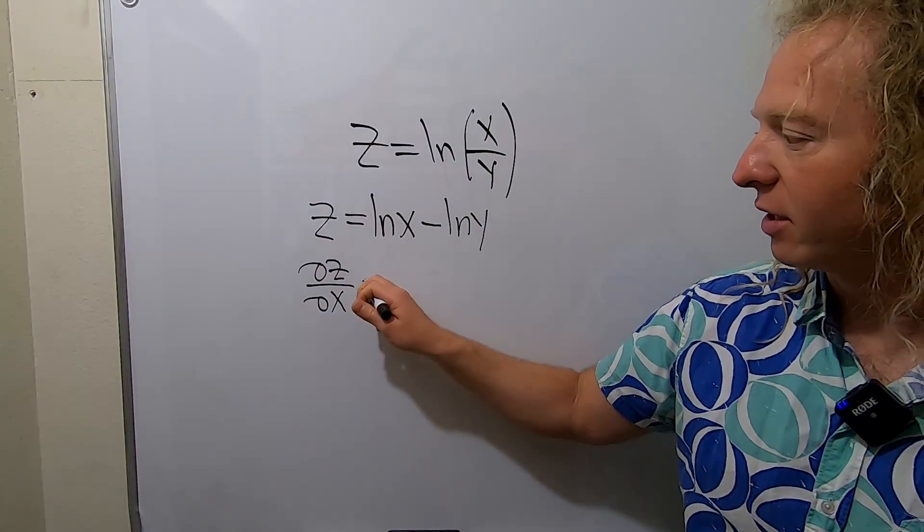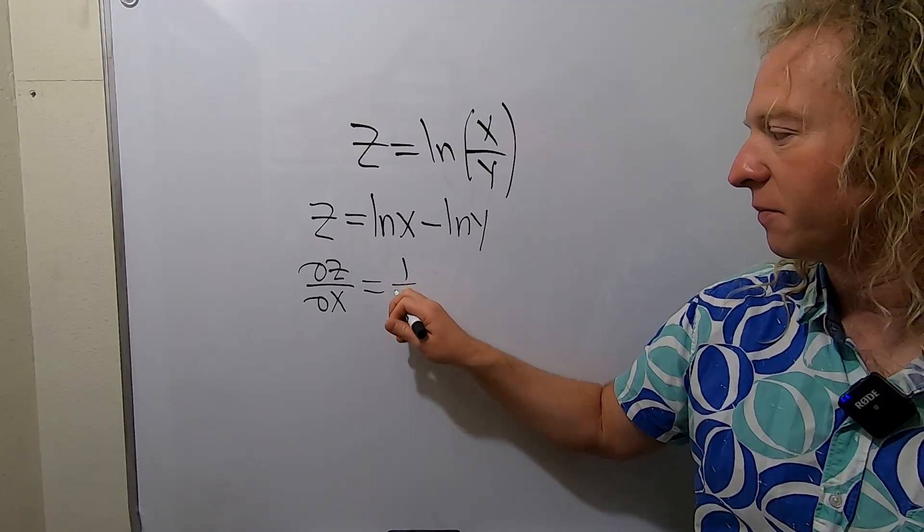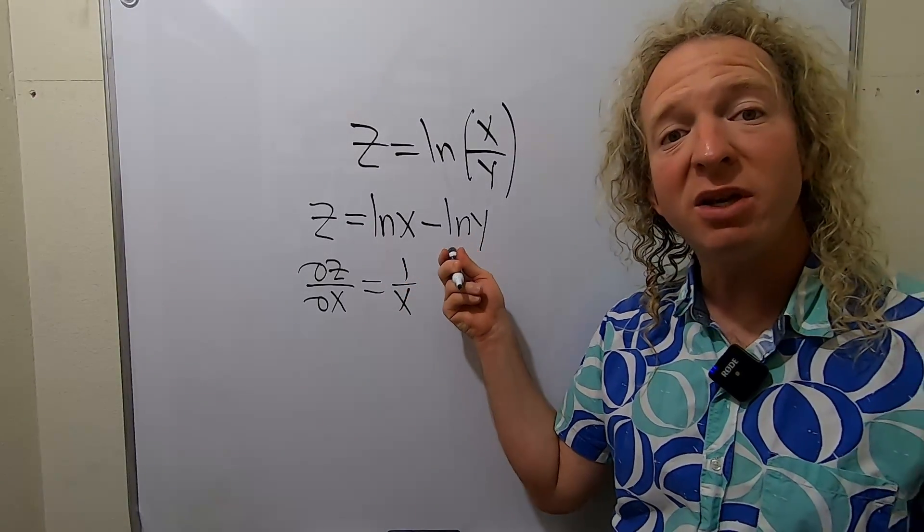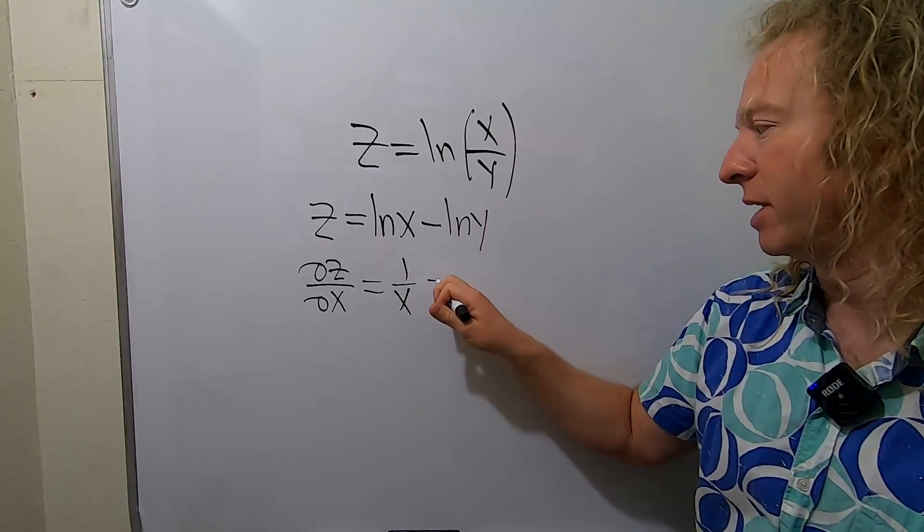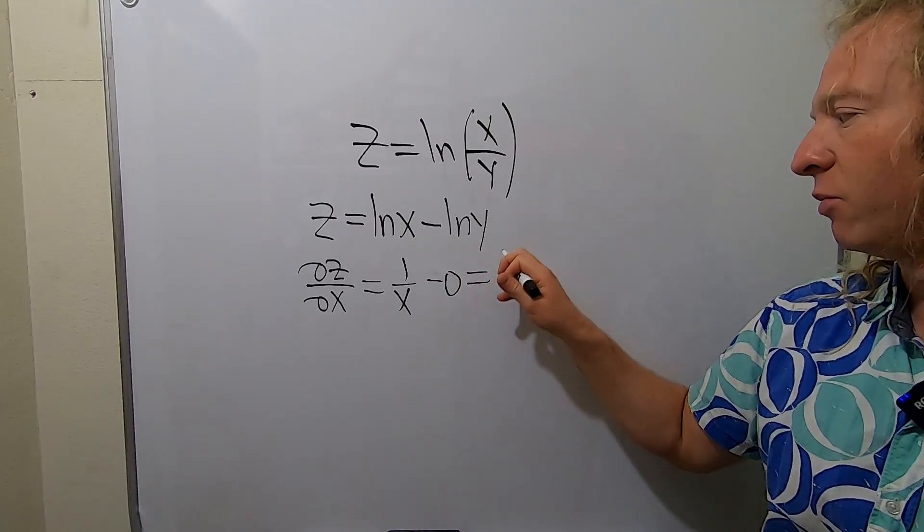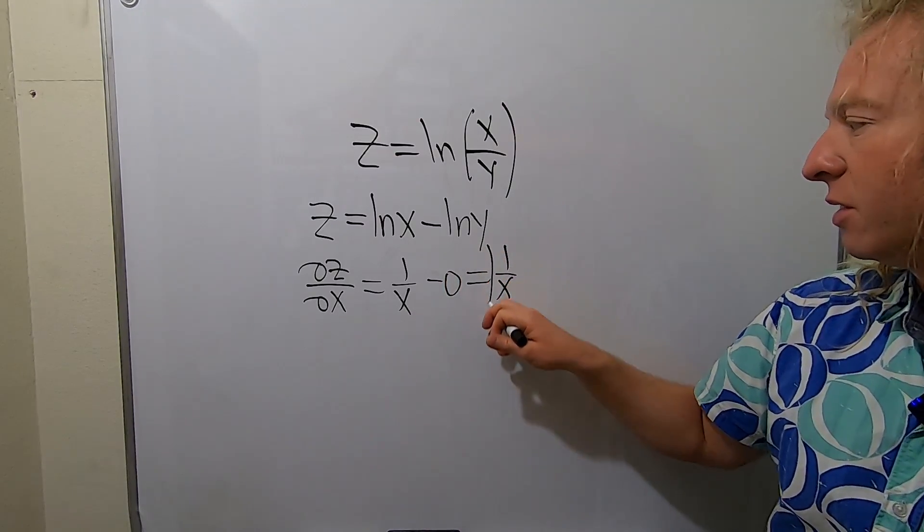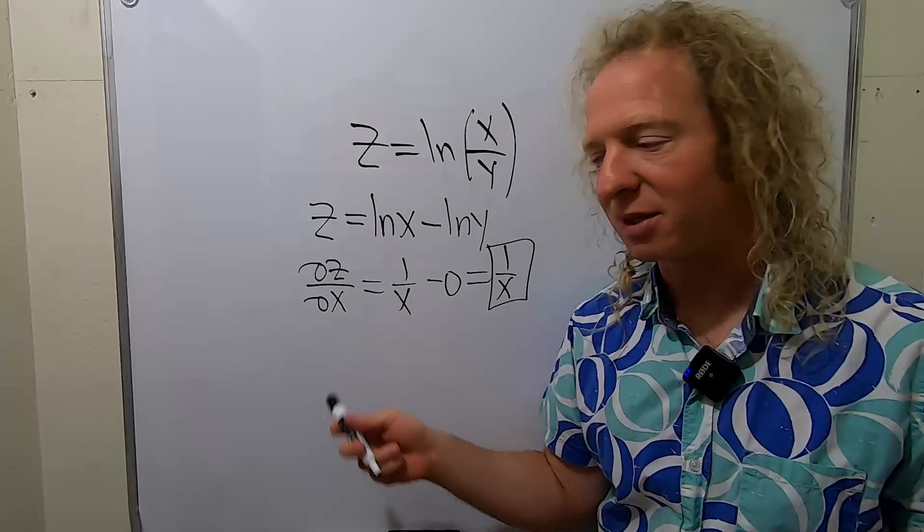So here, the natural log of x, its derivative is 1 over x, and the derivative here will be 0 because this is a constant, so minus 0. We just get 1 over x. This would be the partial derivative of z with respect to x.